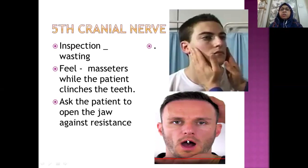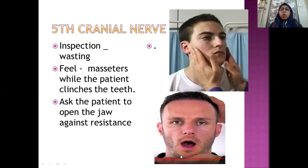To test the strength of the pterygoid muscles, tell the patient to open the jaw against resistance. Put your hand on the jaw and give pressure, then tell the patient to open the mouth against resistance. If the patient can do this, the strength of the medial and lateral pterygoid muscles is intact.